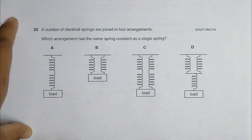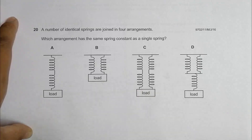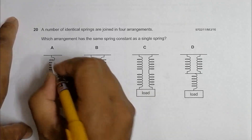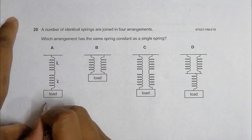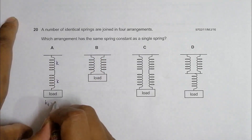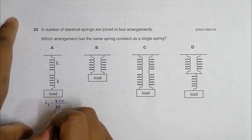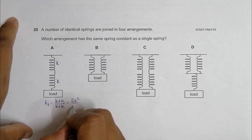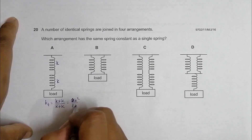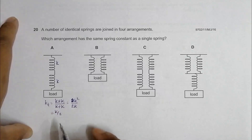We have to identify the arrangement where k_total equals k. In arrangement A, the two springs are in series, so k_total equals k times k divided by k plus k, which equals k squared divided by 2k, equal to k over 2. So this is not the answer because it's not equal to k.